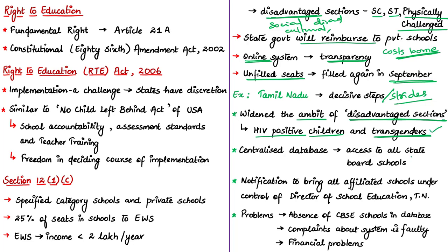Tamil Nadu has also created a centralized database where people can access all matriculation schools that lie within one kilometer of their residence. The act mentions these as neighborhood schools — the nearest primary or upper primary school within prescribed walking distance from the child's residence. Under RTE rules for most states, schools for classes 1 to 5 must be within 1 kilometer walking distance, and for classes 6 to 8 it is 3 kilometers.